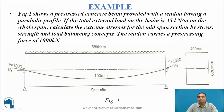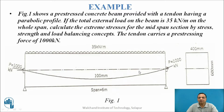Figure 1 shows a pre-stress concrete beam provided with a tendon having a parabolic profile. The total external load on the beam is 35 kN per meter on the whole span. Calculate the extreme stresses for mid-span section by stress, strength and load balancing concepts. The tendon carries a pre-stressing force of 1000 kN. The beam has a span of 6 meters, cross section 400 mm wide and 600 mm deep, with eccentricity at center of 100 mm and zero at the ends.